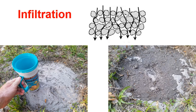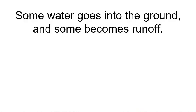Infiltration is the process of water going into the ground. Here, water was poured on top of this soil, and you can see there is no more water left because it all went into the ground. That's infiltration.